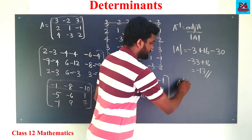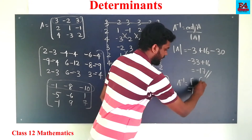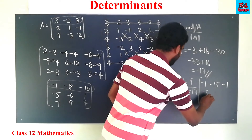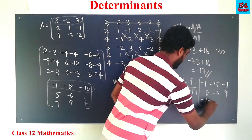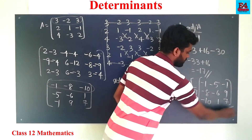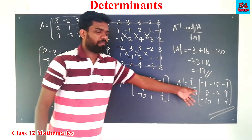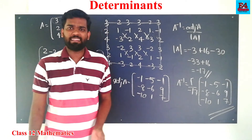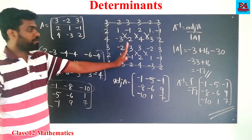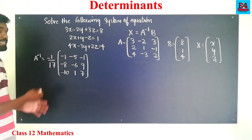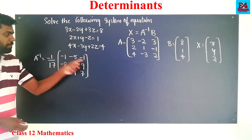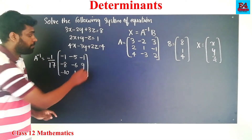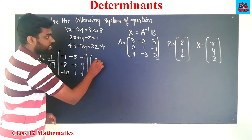So A inverse is equal to 1 by minus 17 times the adjoint A: the matrix minus 1, minus 5, minus 1; minus 8, minus 6, 9; minus 10, 1, 7. Now we write A inverse into B where B is the column vector 8, 1, 4.